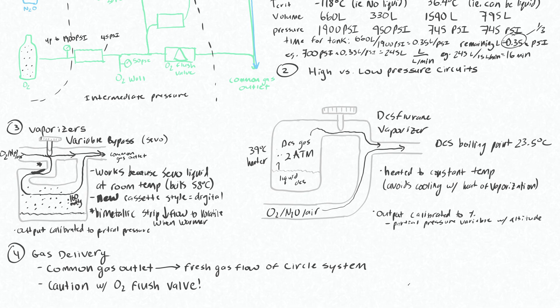After running through the flow meter and the vaporizer, your gases will go to your common gas outlet, which then goes to the fresh gas flow of the circle system. We'll talk about that in the next video. Just to clarify that the common gas outlet shown here is the same gases that are entering through the fresh gas flow.